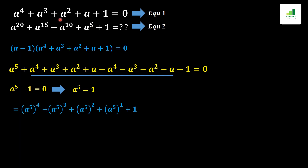Now we simplify equation 2 by rewriting each power as a multiple of 5: a to the power 20 is written as (a to the power 5) to the power 4; a to the power 15 is (a to the power 5) to the power 3; a to the power 10 is (a to the power 5) squared; a to the power 5 remains as (a to the power 5) to the power 1; and plus 1 stays the same.